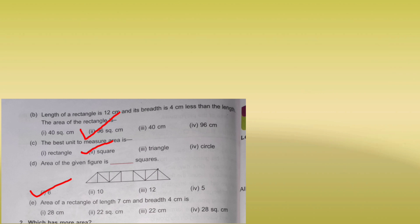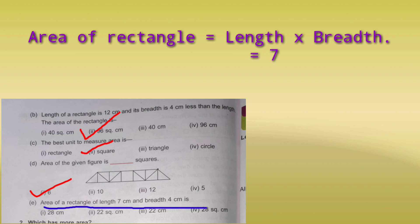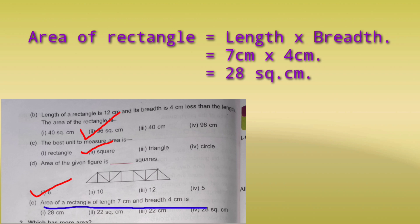Next: find the area of a rectangle with length 7 cm and breadth 4 cm. Area equals 7 multiplied by 4, which is 28 cm². Between the two options both showing 28, the correct one is 28 square cm.